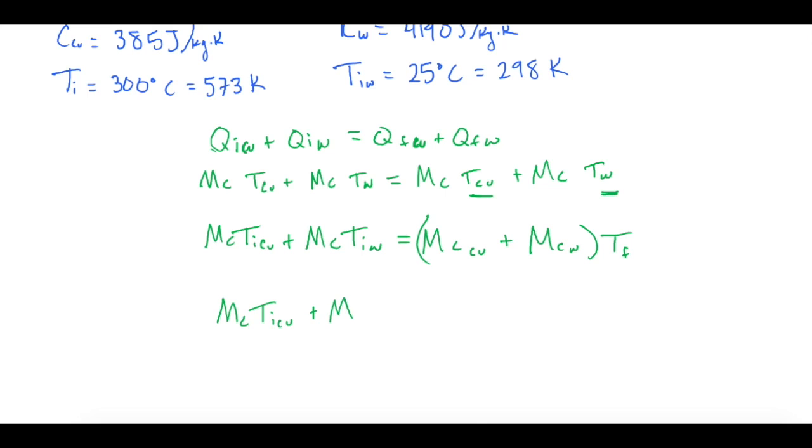Now we can divide both sides by mc for both copper and water, so we'll have mc T initial copper plus mc T initial water divided by mc copper plus mc of water, and that will all equal the final temperature.